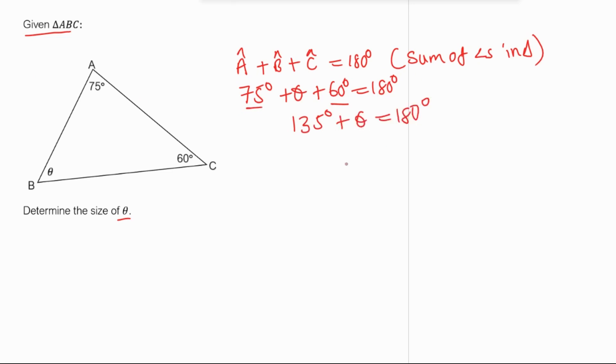You can subtract 135 degrees from both sides of the equation, so we remain with theta equals 180 degrees minus 135. It means that our angle theta is 45 degrees.